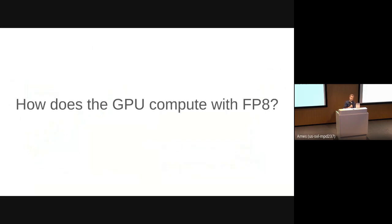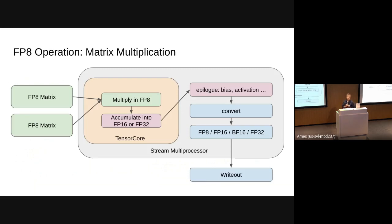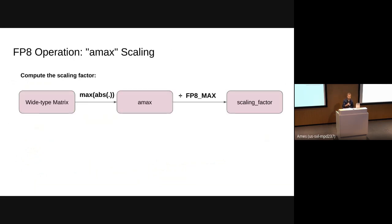For GPU compute with FP8, imagine a GEMM scenario where two FP8 matrices are fed into the streaming multiprocessor, which feeds them into the tensor core. The tensor core multiplies and accumulates to a wider type — FP16 or FP32. Still inside the SM, we can fuse bias and activation operations, then convert back to FP8 or any wider data type, and write back to memory. So we have the option of controlling both input from memory to SM and output from SM back to memory to be FP8, saving memory bandwidth.